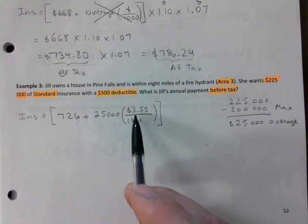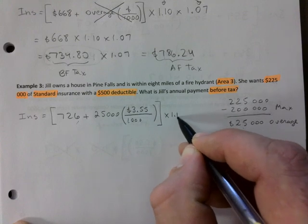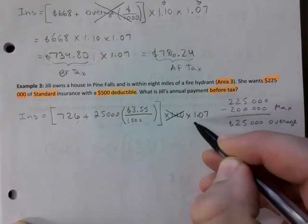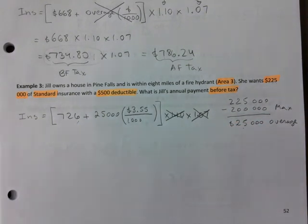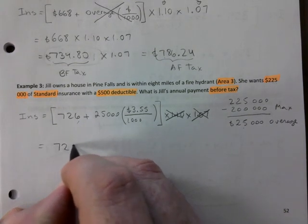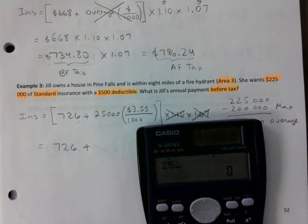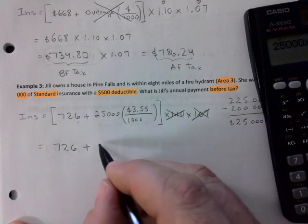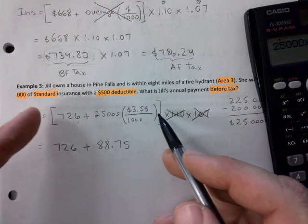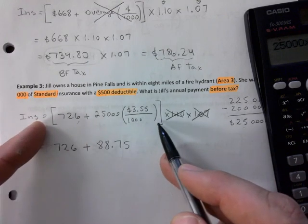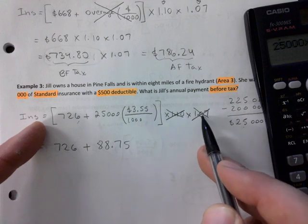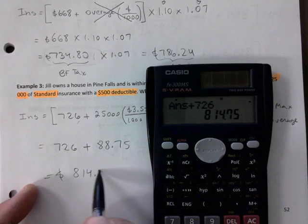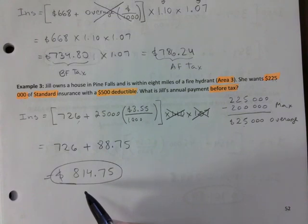She has a $500 deductible, so we do NOT multiply by 1.1. It's before taxes, so we do NOT multiply by 1.07. Calculate: 25,000 × 0.00355 = $88.75. Then add $726 + $88.75 = $814.75. That's the annual premium — $500 deductible, before taxes.